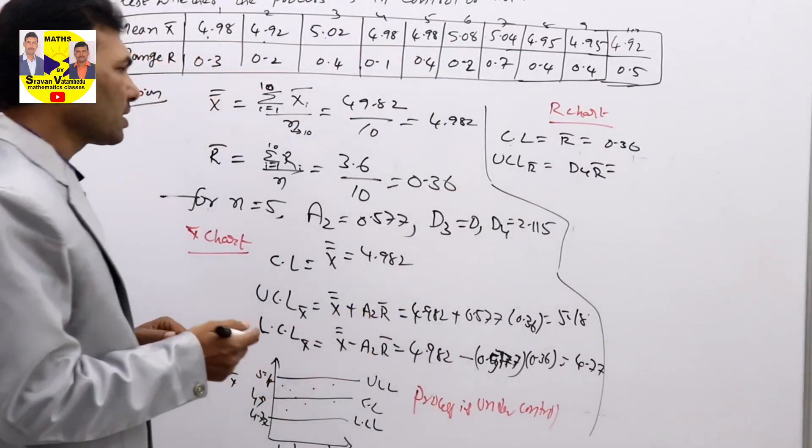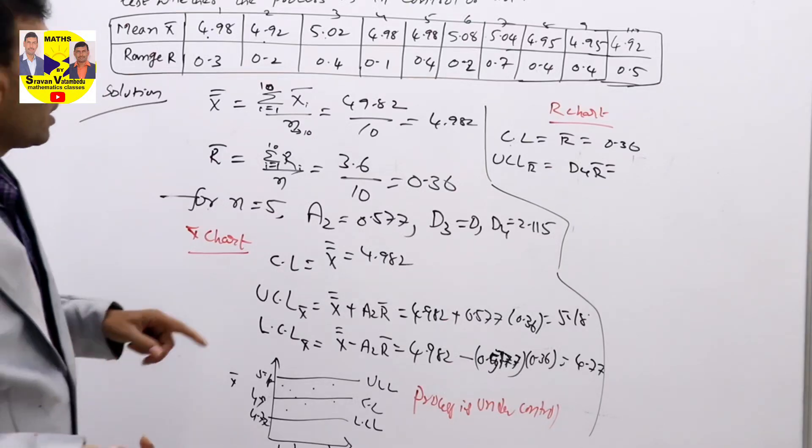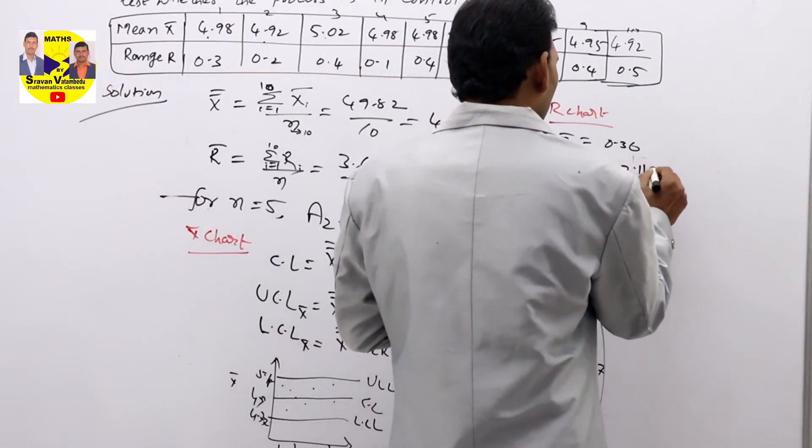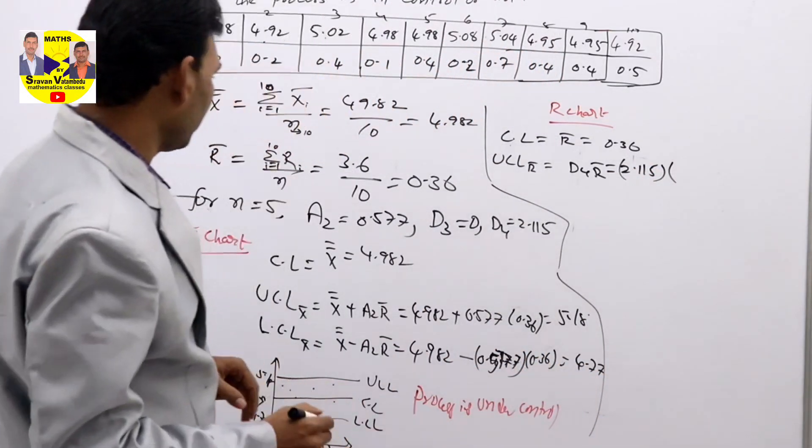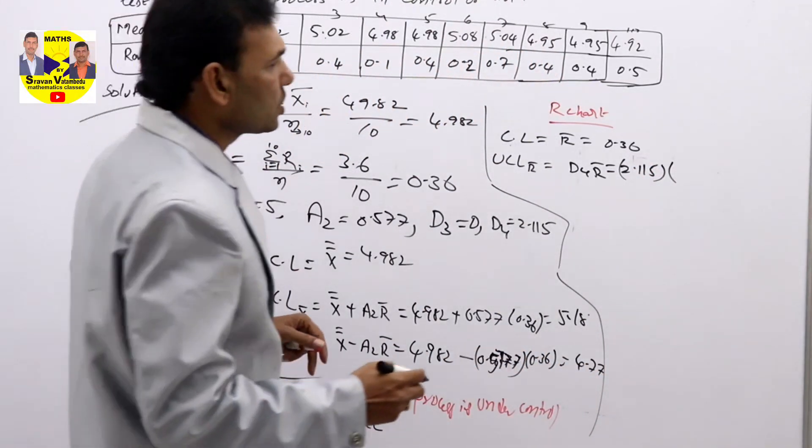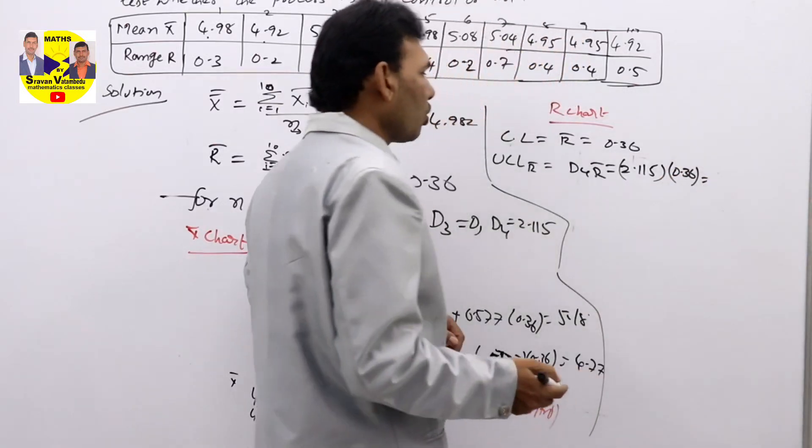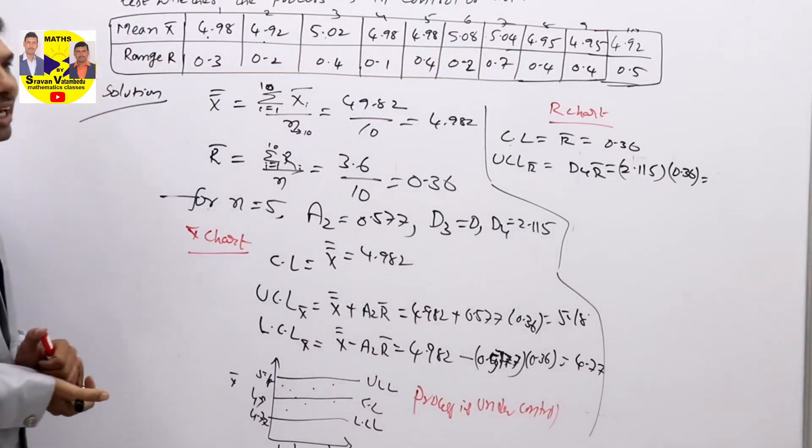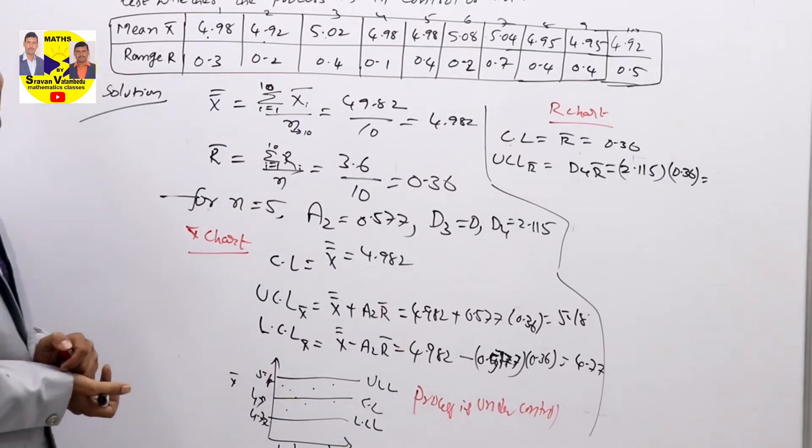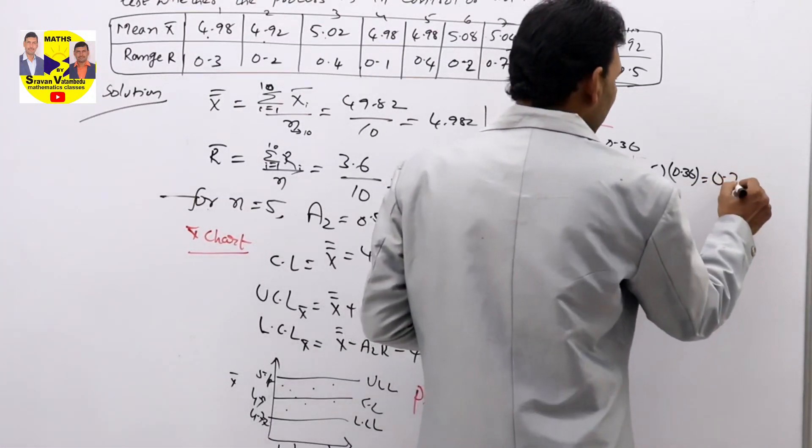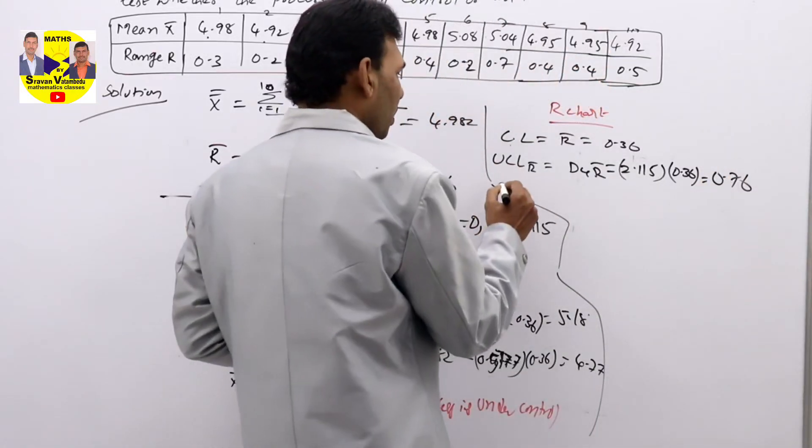D4 R bar means D4 value is there. D4 is 2.115, 2.115 into R bar value. R bar is 0.36. If you multiply 2.115 into 0.36, you will get 0.76, UCL bar.